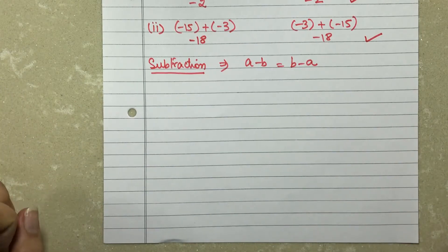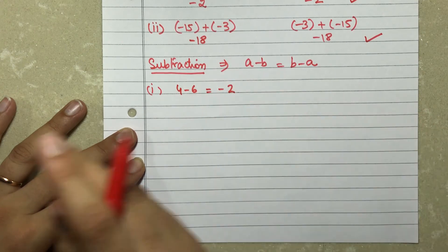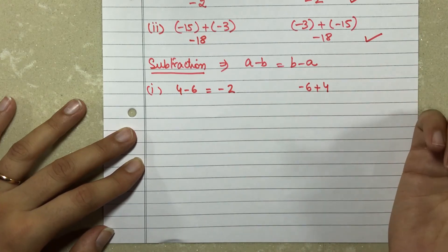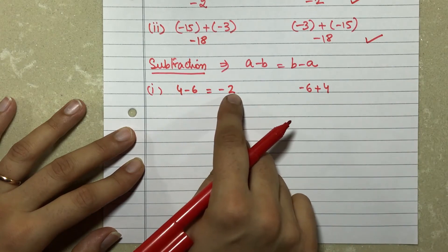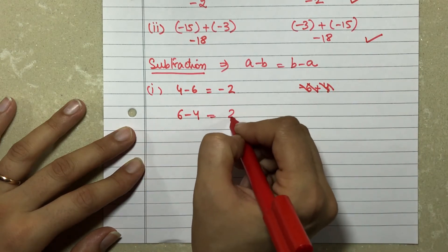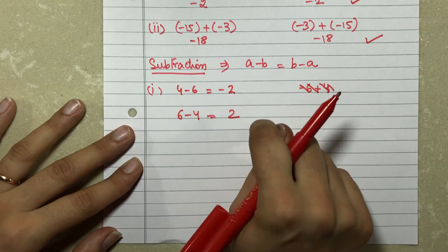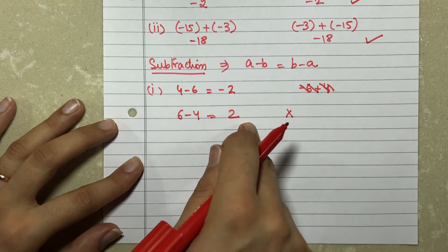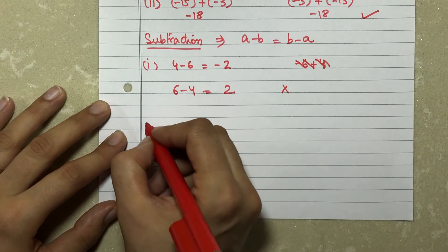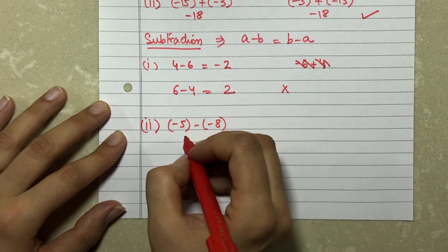Now let's look at subtraction. The property says a minus b should be equal to b minus a. Let's take an example to validate: 4 minus 6 gives me an answer minus 2. If I switch their positions, it becomes 6 minus 4, which comes out to be 2. Minus 2 and 2 are not the same, so subtraction for integers is not commutative.